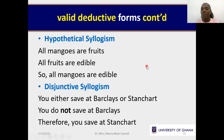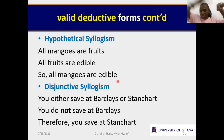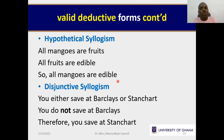On a Venn diagram, all mangoes would be inside a set of fruits, and all fruits would themselves be inside the set of edibles — an intersection within an intersection within a bigger set. If you plotted the premises, the obvious conclusion is that all mangoes, the smaller set, are already inside the very big set of edibles. That is the reasoning behind hypothetical syllogism.